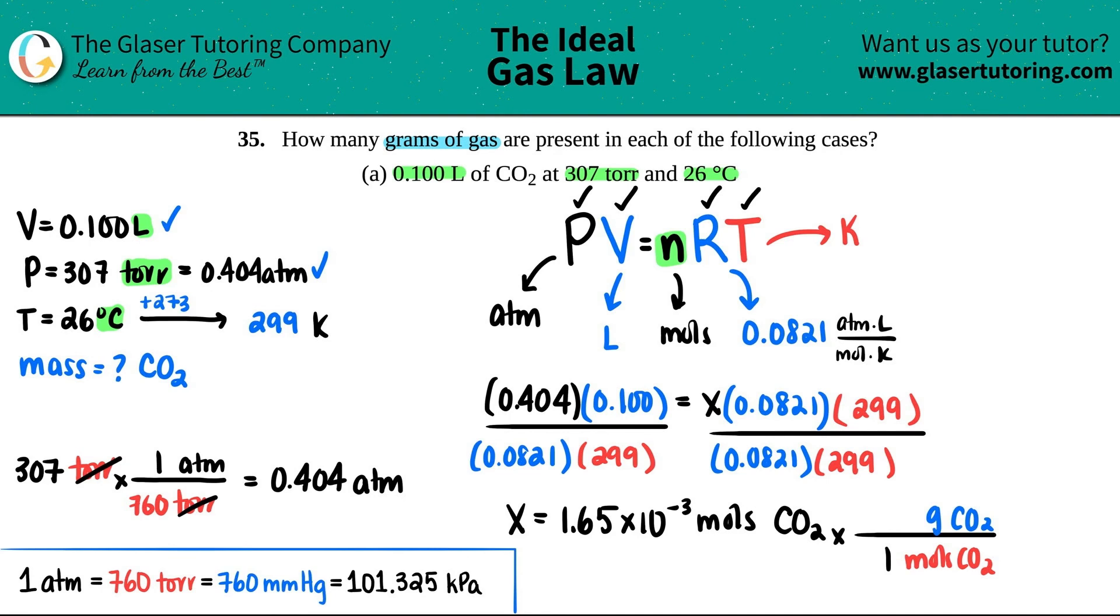44.01 grams per mole. Cancel out the moles and now all I got to do is just times that number, 1.65 times 10 to the negative third times 44.01, and this equals 7.26 times 10 to the negative second, and that's now grams of CO2. And you are done. That's the final answer.